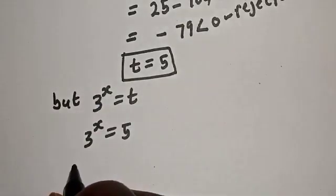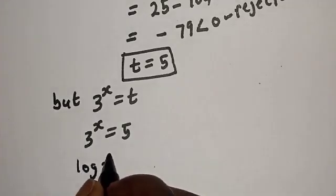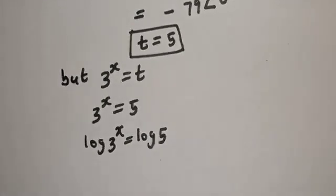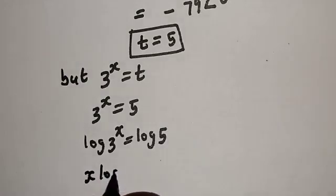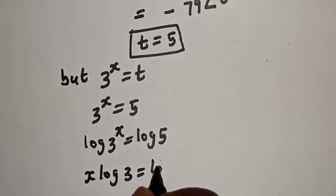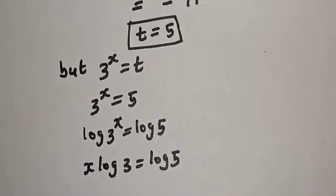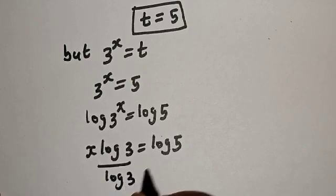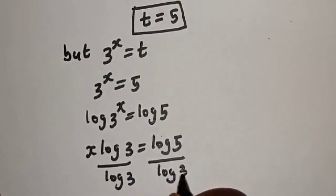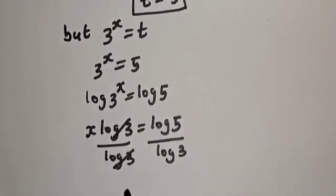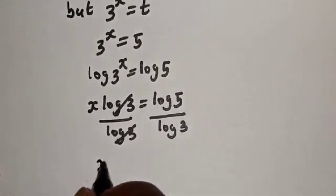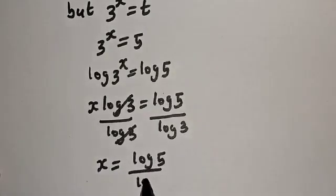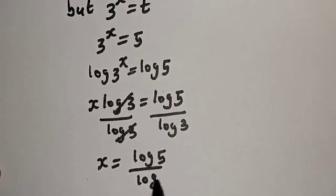Let's take the log of both sides. Log of 3 raised to power s equals log 5. Then s times log 3 equals log 5. Dividing both sides by log 3, log 3 cancels, and s equals log 5 over log 3.